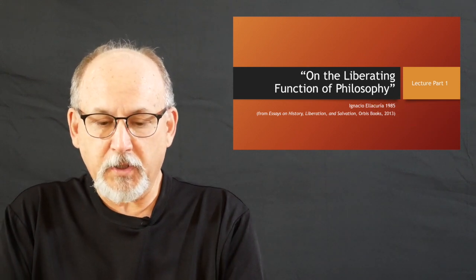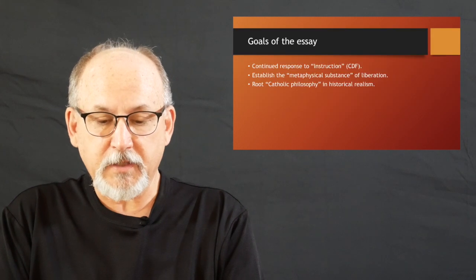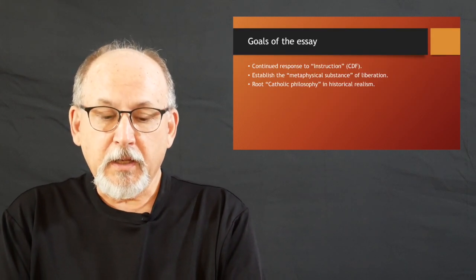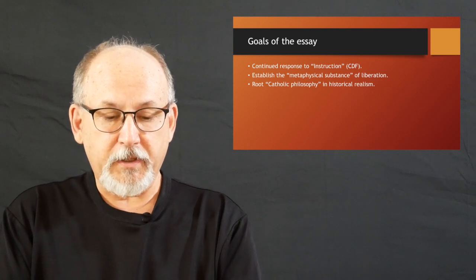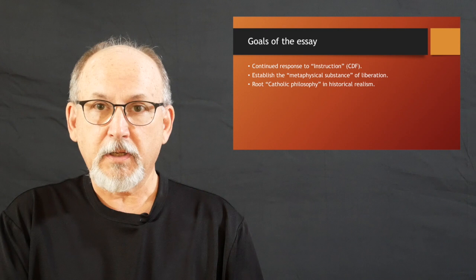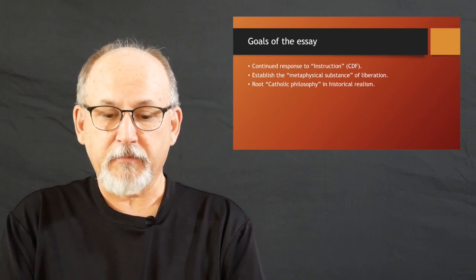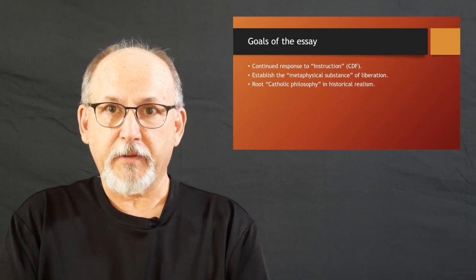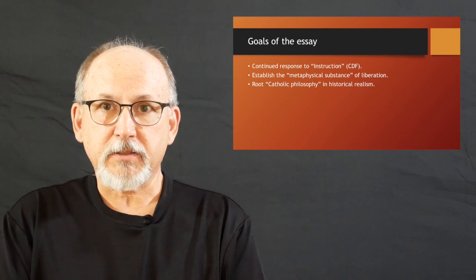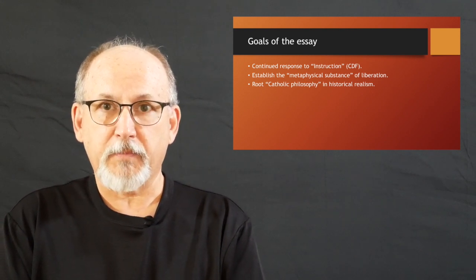This is the first part of a two-part lecture on Ignacio Ellacuría's 1985 essay on the liberating function of philosophy. The goals of this essay, according to Ellacuría, are to first continue his response to the instruction on some aspects of liberation theology, a document produced by the Congregation for the Doctrine of the Faith at the Vatican under the direction of Cardinal Joseph Ratzinger, who later became Pope Benedict XVI.